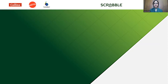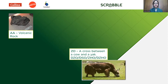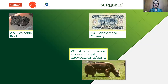Let's focus on some of the two-letter words we mentioned. AA is a type of volcanic rock. ZO is an animal — it is a cross between a yak and a cow which we find in the Himalayas. Not just ZO, but variant spellings DZO, DSO, ZHO, and DZHO are all valid words. XU is the currency of Vietnam.